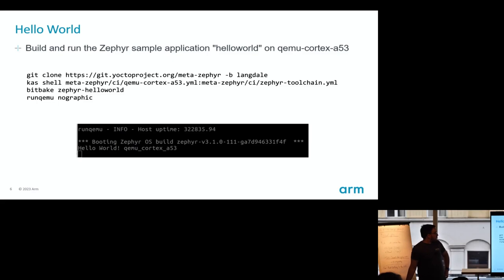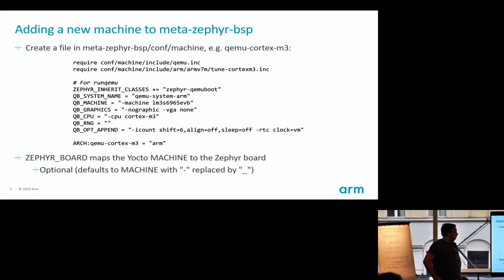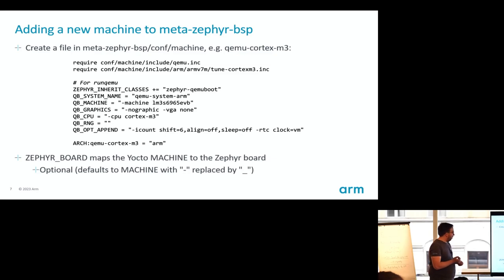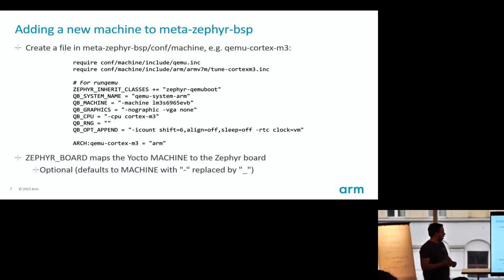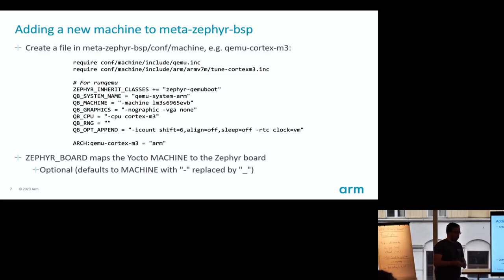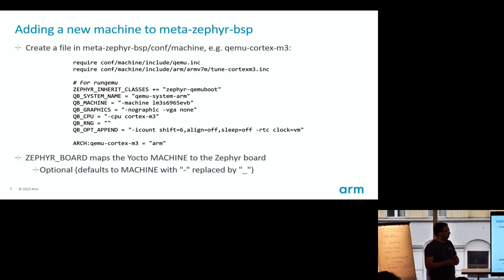That's hello world. If you want to add a new machine, it's really straightforward, especially if there's an existing board definition in upstream Zephyr. This is the machine config for the QEMU Cortex-M3. The key thing is the ZEPHYR_BOARD bitbake variable, which defaults to the Yocto machine name — in this case it automatically picks up the QEMU Cortex-M3 board from Zephyr itself. Adding a new board is very easy.